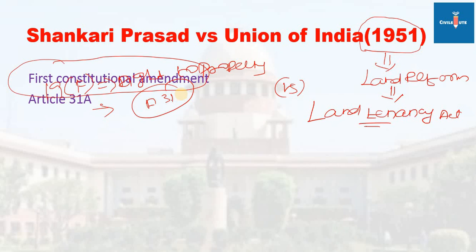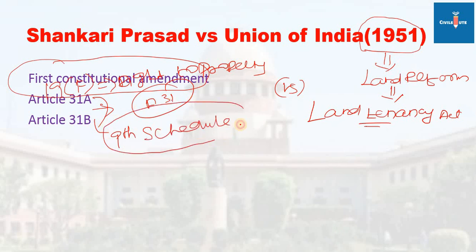So, the government passed the First Amendment. This relates to what we call Article 31, Article 31A, and Article 31B — also called the Compensation articles. Article 31A and 31B were placed in the 9th Schedule of the Indian Constitution.